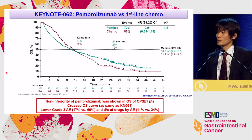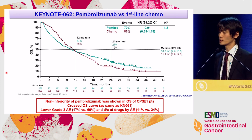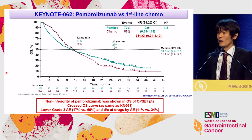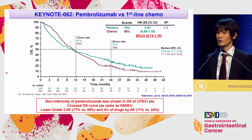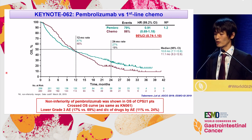Looking at the first comparison between Pembrolizumab monotherapy and chemotherapy, it met the primary endpoint showing non-inferiority in overall survival. The upper limit of the 99.2% confidence interval was 1.18, which was lower than the predefined 1.2. Looking at the 95% confidence interval, the upper limit was 1.1. These hazard ratios suggest non-inferiority. Moreover, lower incidence of grade 3 or higher events may further support the non-inferiority of survival.